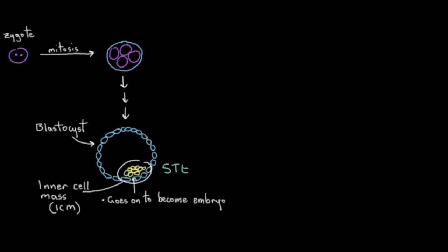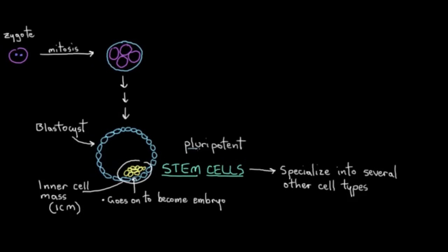And this is a really special little bunch of cells that go on to become the embryo. So these are called stem cells. And what they can do as stem cells is they can specialize into several other cell types. So we actually call them pluripotent stem cells. Pluri meaning several, and potent referring to these stem cells' ability to actually do this differentiation.